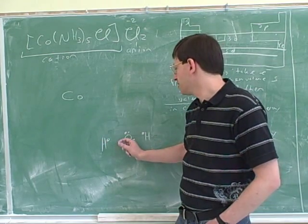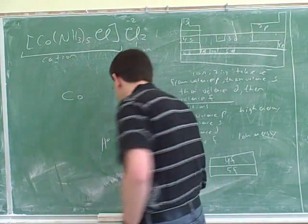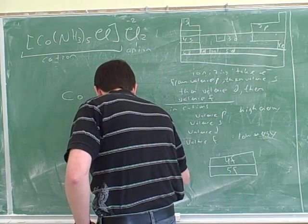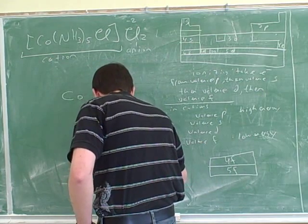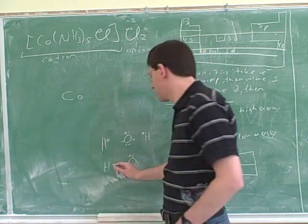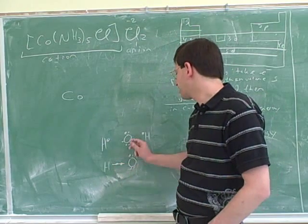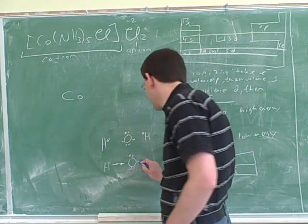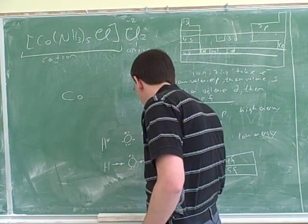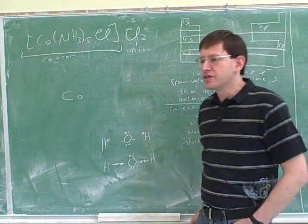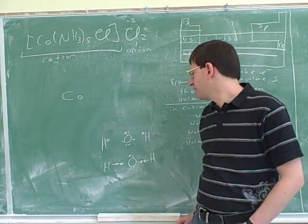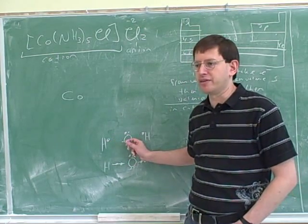And now those two electrons are forming this bond. And the oxygen could donate the electron here, and the hydrogen could donate the electron here. And that would form this bond. So the key point is that normally we form bonds by each atom donating an electron.